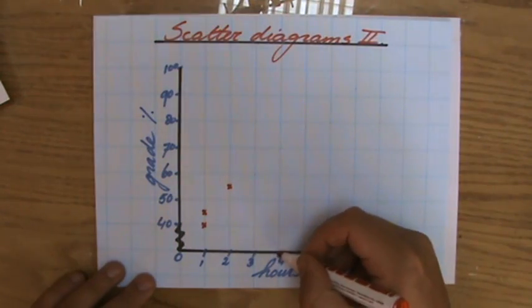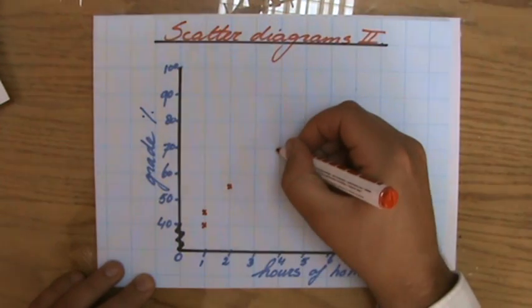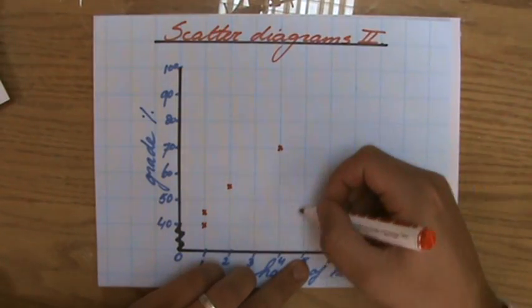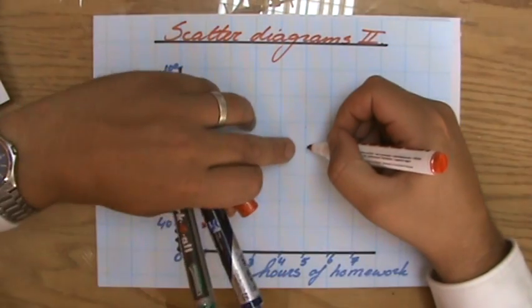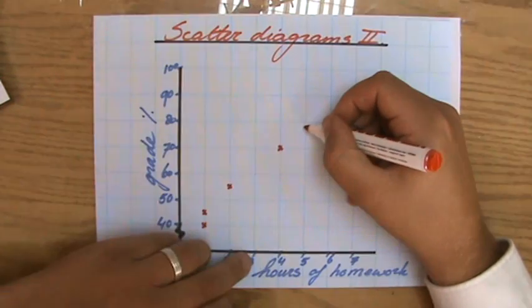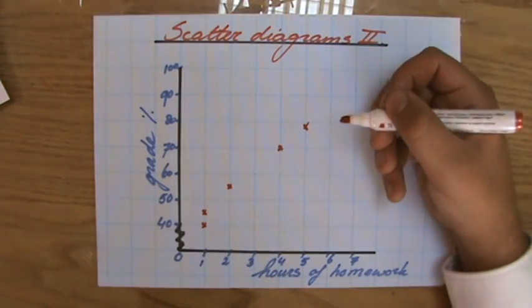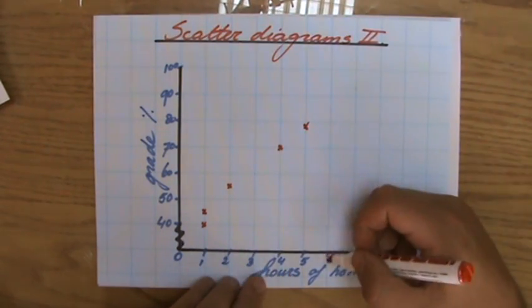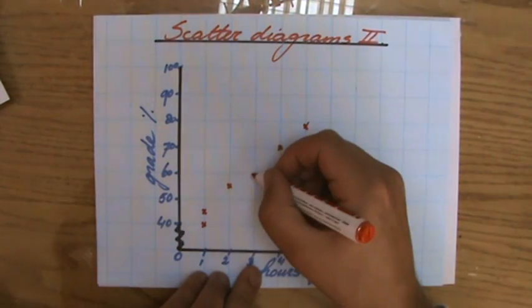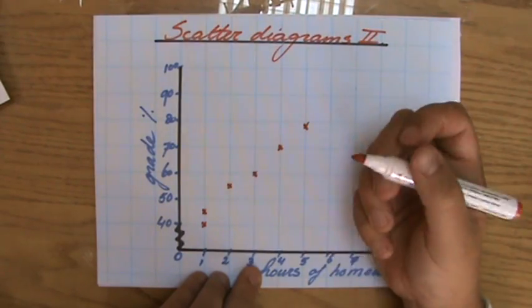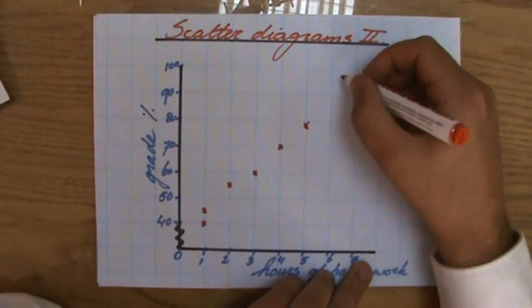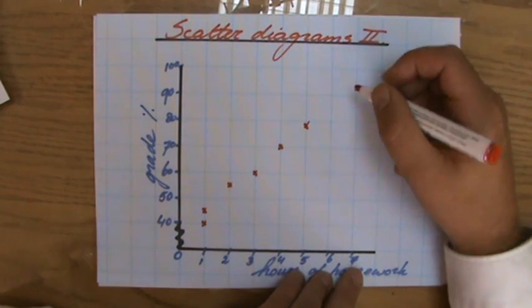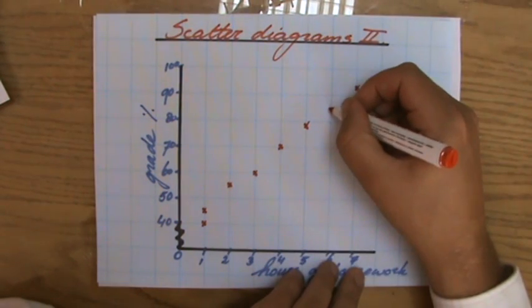Four hours and 70%, that's over there. Five and 78%, 70... and then I have to count the blocks and 78 is going to be there for me. Three and 60%, so three hours and the person got 60%. Seven hours, somebody got 93%, fantastic, well done. Six hours, 85%, also amazing.